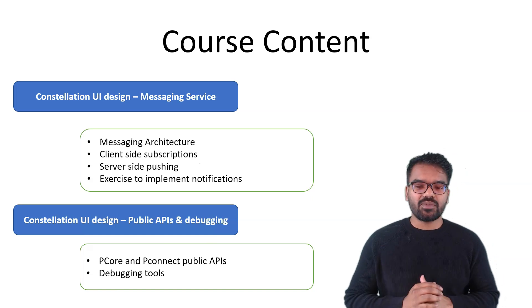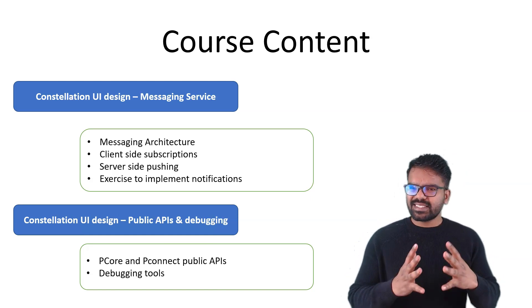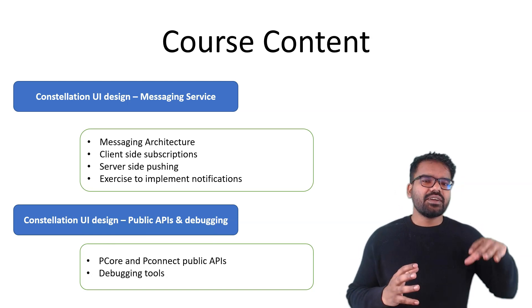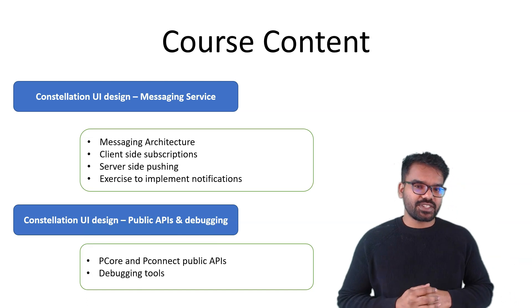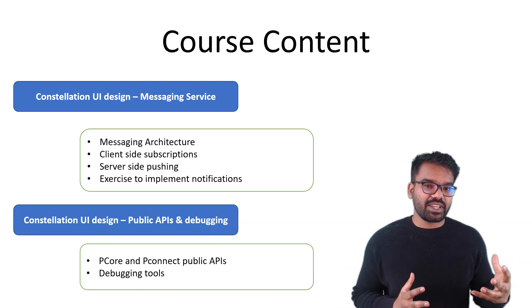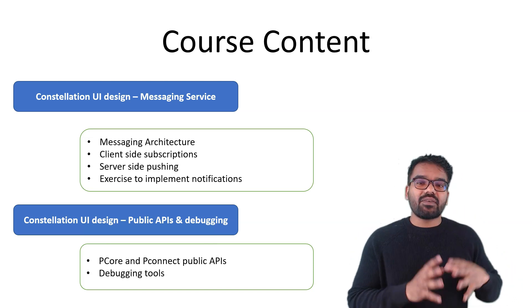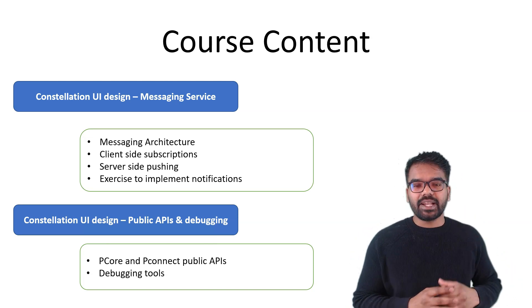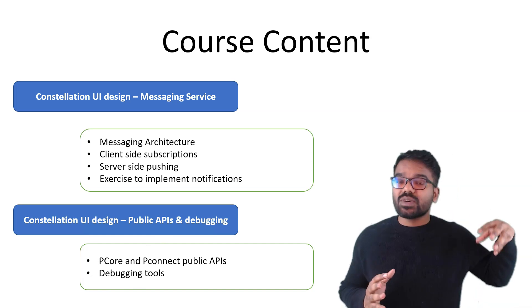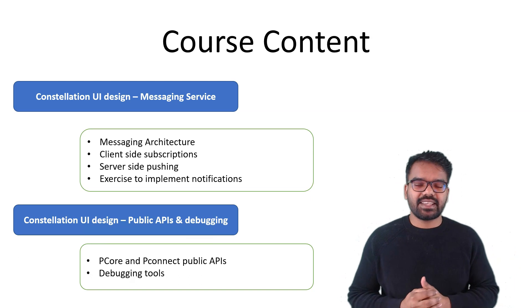Once that is done, we get into another advanced topic — how to use the messaging service. Messaging service covers how Pega supports notifications. We will see how to use it in constellation, where you need a separate messaging server available as a middleman. We will also see how to use client subscriptions and how a server can push notifications, with a hands-on exercise.